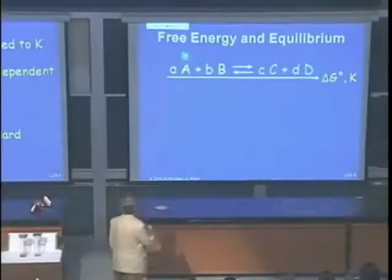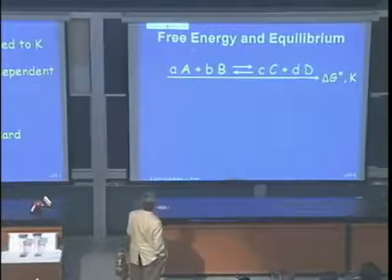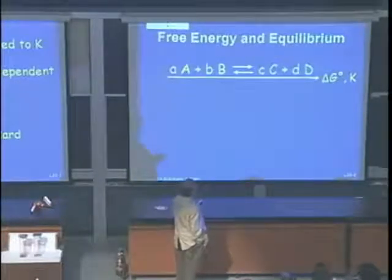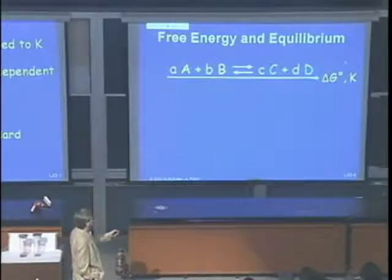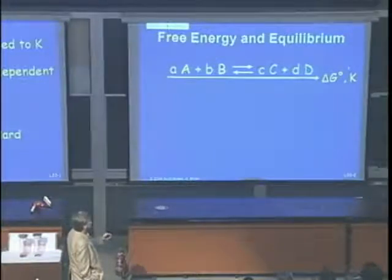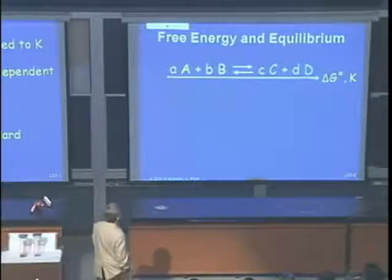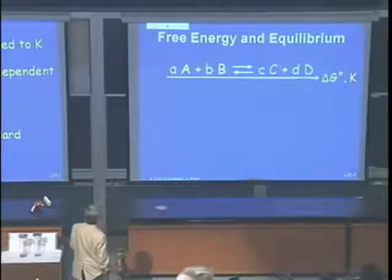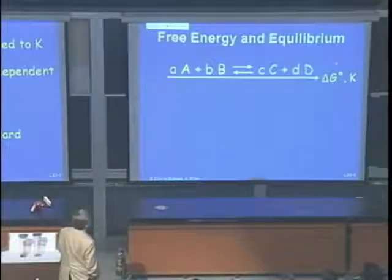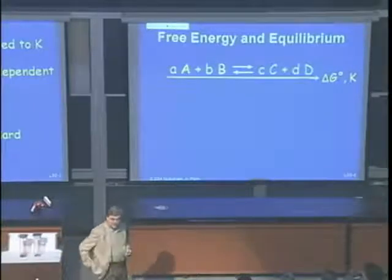Last time we talked about free energy and equilibrium. For reaction A + B → C + D, if delta G-naught is negative, the reaction is spontaneous. When it reaches equilibrium, K — the concentration of products divided by reactants — is larger than one.